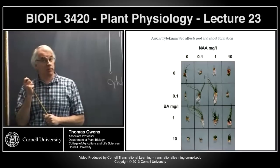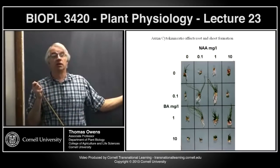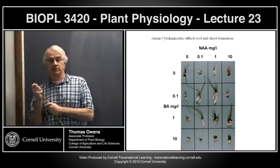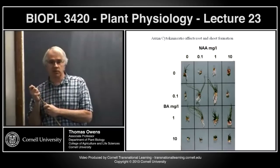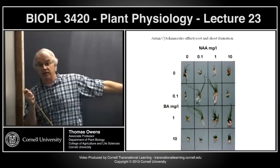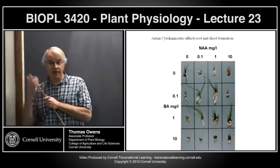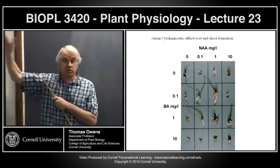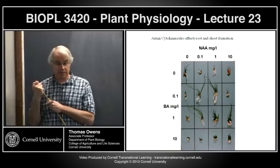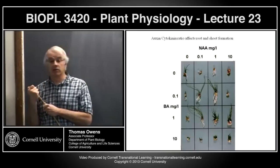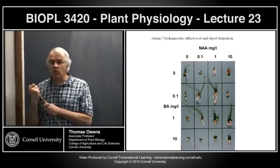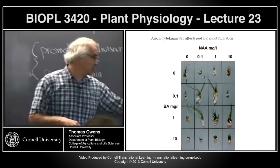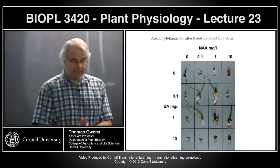The other component could be whether cytokinins produced in roots are produced as inactive precursors — the ribotides and ribosides — but there's very little data on that despite it being an obvious experiment to do. We'll see when we talk about ethylene that local concentrations are almost entirely controlled by synthesis and not by transport. So there are no rules — it varies depending upon the physiological conditions. See you on Thursday.